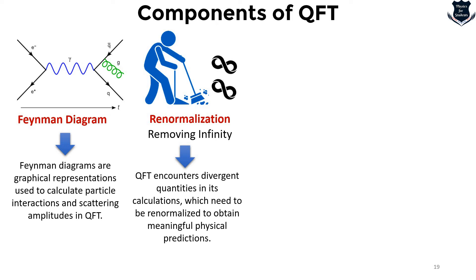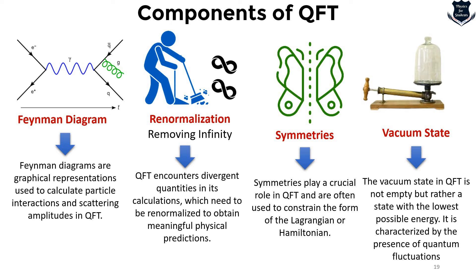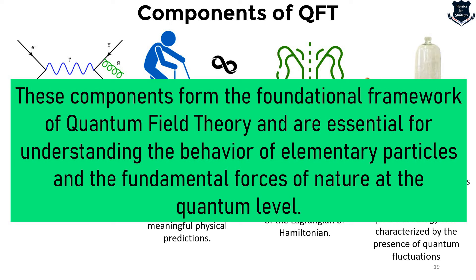Symmetries play a very crucial role in QFT and are often used to constrain the form of the Lagrangian or Hamiltonian. The vacuum state in QFT is not empty, but rather a state with the lowest possible energy, characterized by quantum fluctuations which give rise to observable phenomena — for example, the Casimir effect. Taken together, these components form the foundational framework of quantum field theory, essential for understanding elementary particles and fundamental forces at the quantum level.